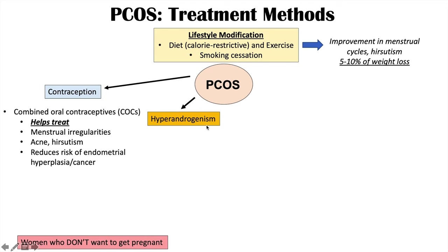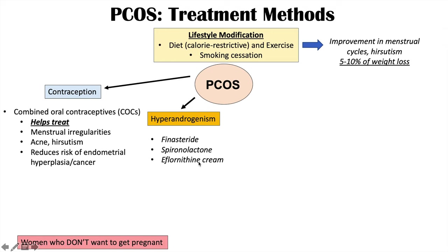The second treatment category addresses hyperandrogenism specifically. Combined oral contraceptives can treat signs like acne and hirsutism, but if there is no improvement after months of use, we move to other treatments: finasteride, a 5-alpha reductase inhibitor; spironolactone, which is anti-androgenic; or topical eflornithine cream for hirsutism specifically. Do not use these treatments if trying to get pregnant, as they can affect gonadal development in a male fetus.